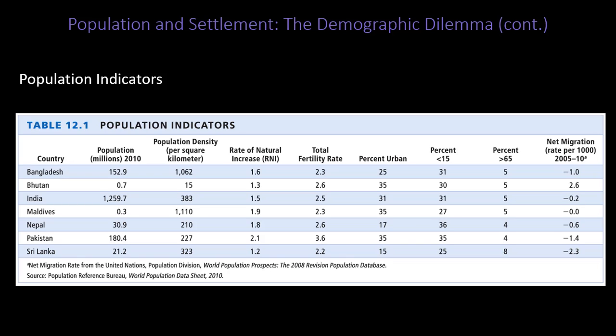Bhutan has a small population and very small density. India has almost 1.25 billion people, with a relatively low population density because there's a lot of land. But people tend to live in very compact rural or urban areas — India has almost 50 cities with a million or more people.